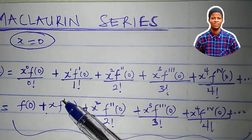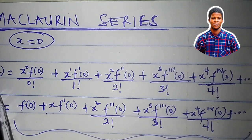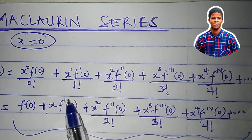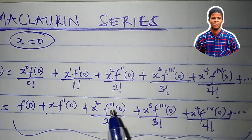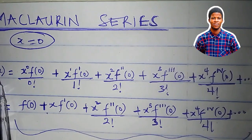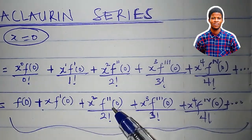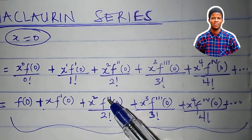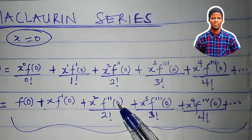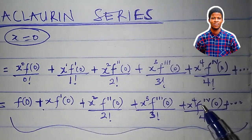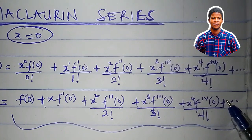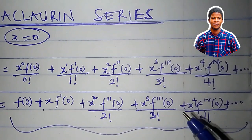Take note: f prime here is the first derivative of the function with respect to x, so f prime of 0 is the value of that derivative at x equal to 0. Similarly, f double prime is the second derivative of the function f of x with respect to x, so f double prime of 0 is the second derivative evaluated at x equal to 0. And so on and so forth. Let's apply this theorem now to solve some problems.